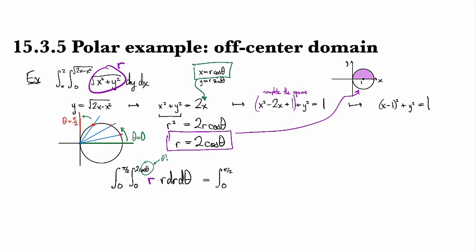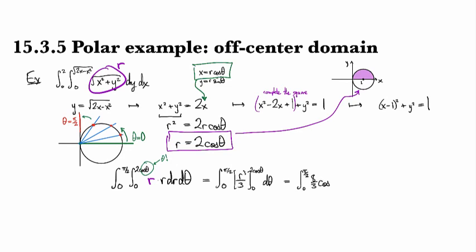So what do we do now? Okay. So, now we integrate r squared, and we get r cubed over 3, and we go from 0 to 2 cosine theta d theta. And so that's going to be 0 to pi over 2 of 8 thirds cosine cubed theta d theta.